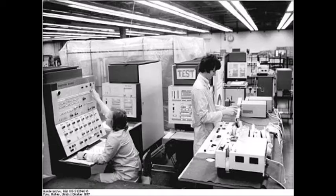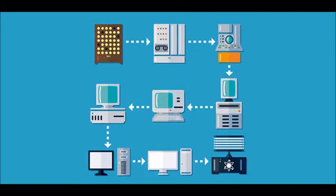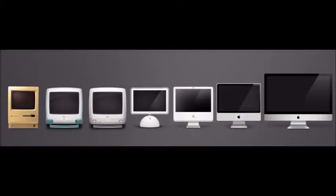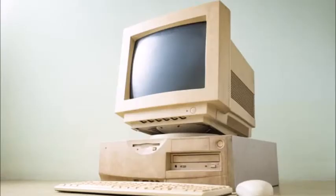Generally speaking, computers can be classified into three generations. First generation: 1937 to 1946. The first electronic digital computer was built in 1937. Development continued until in 1946 the first general purpose digital computers were built. It is said that these computers weighed 30 tons and had 18,000 vacuum tubes, which were used for processing.